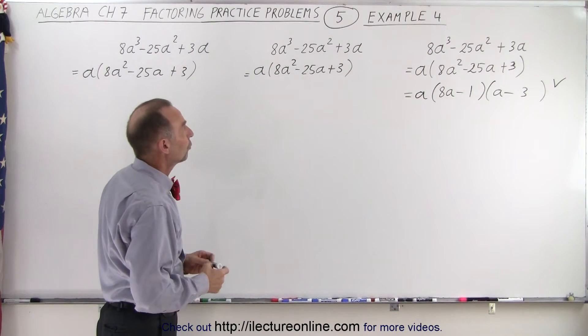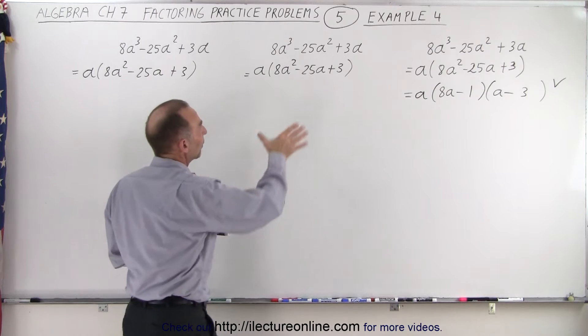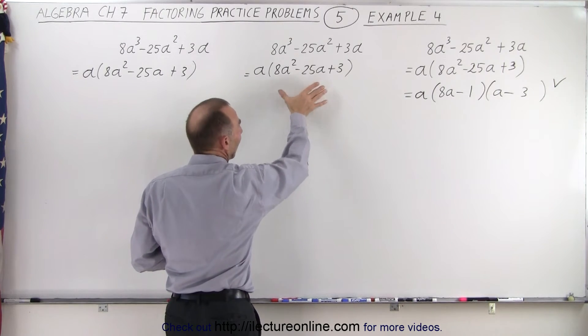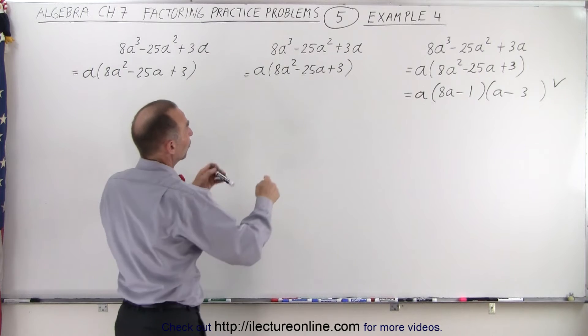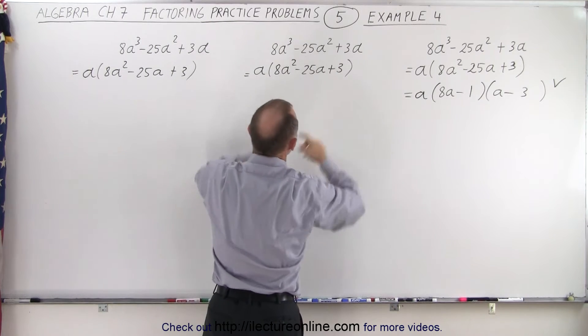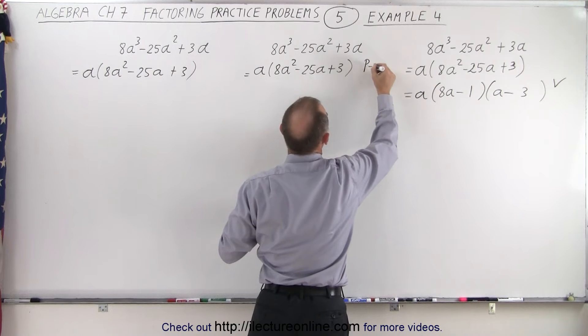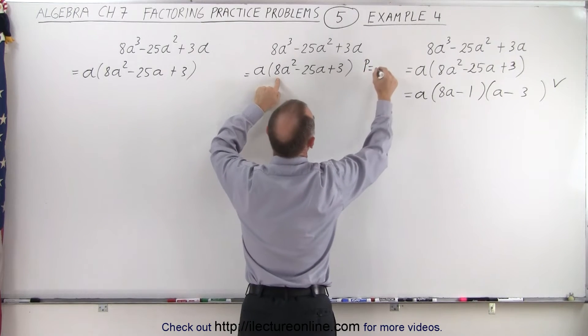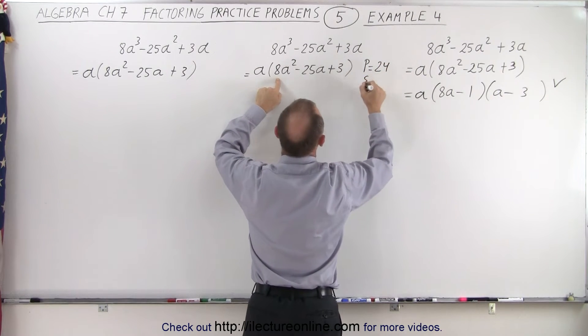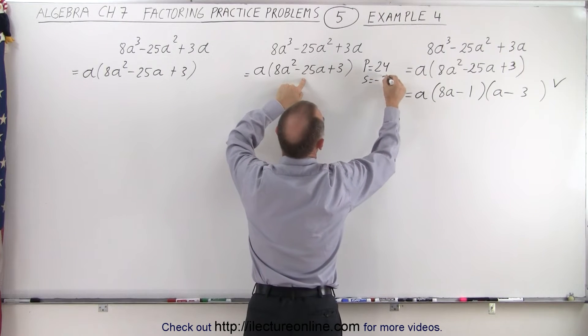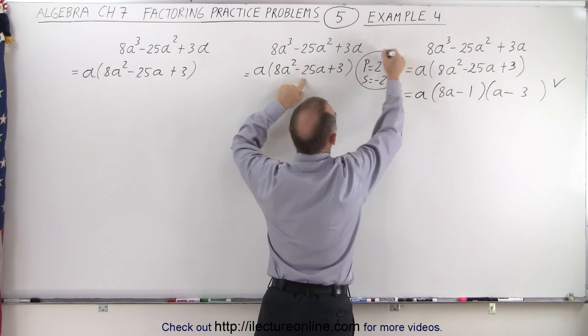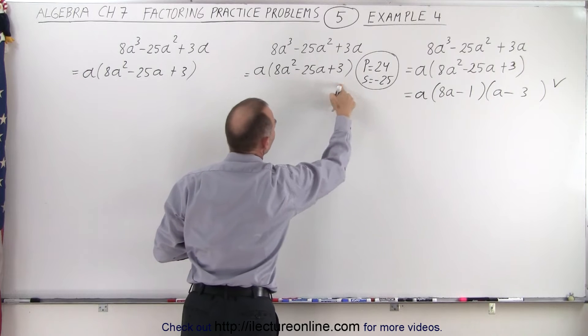Here we're going to do the same thing as we did before by writing this trinomial as a polynomial of 4 terms. We're going to split the middle term into 2 middle terms. And we're going to do that by saying that the product is equal to the product of these two numbers, which is 24, and the sum is equal to minus 25. So this should give us a hint of how to rewrite this.